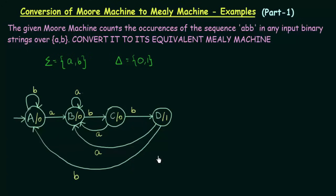Our task is to convert this to its equivalent Mealy machine. We have to design the Mealy machine in such a way that it will work the same, but it should be a Mealy machine. In a Mealy machine, the outputs are associated to the transitions and not the states. So let us try to associate these outputs to the transitions.